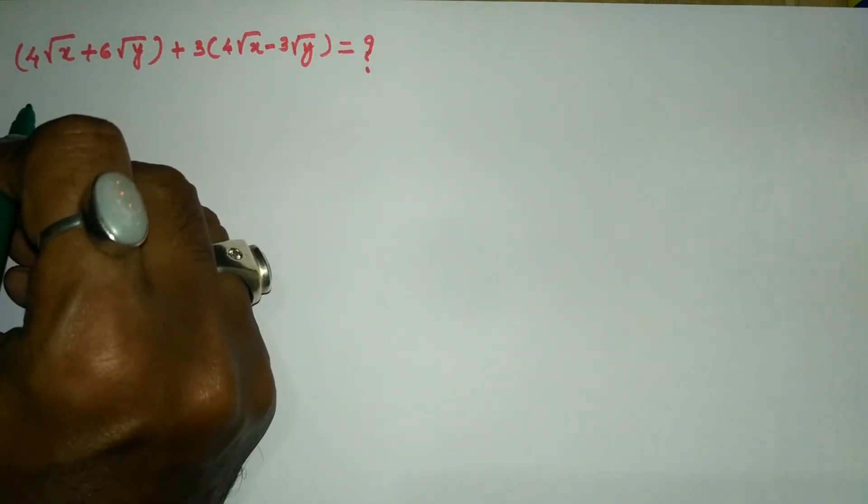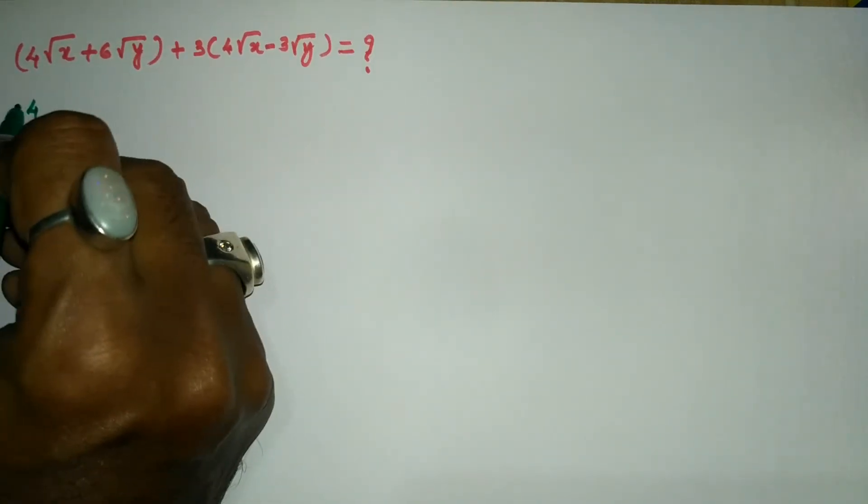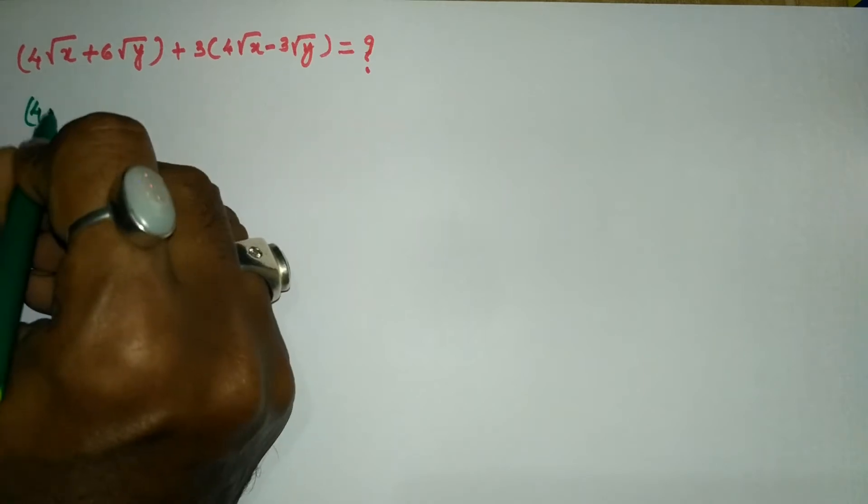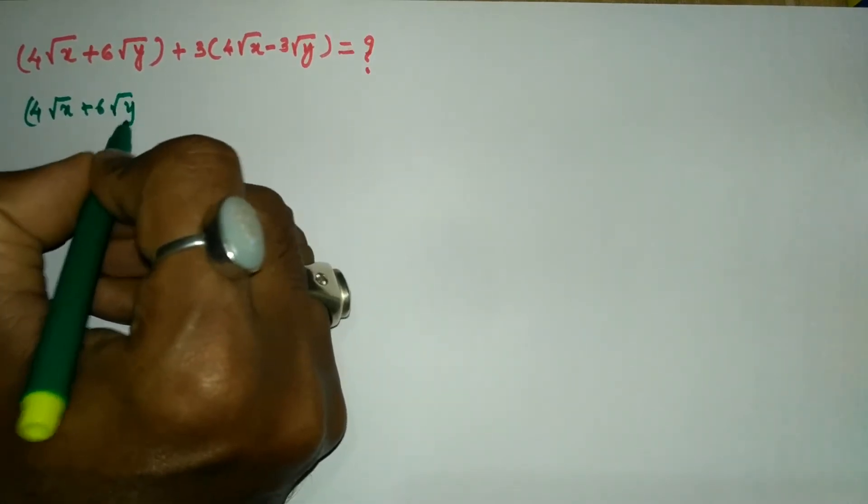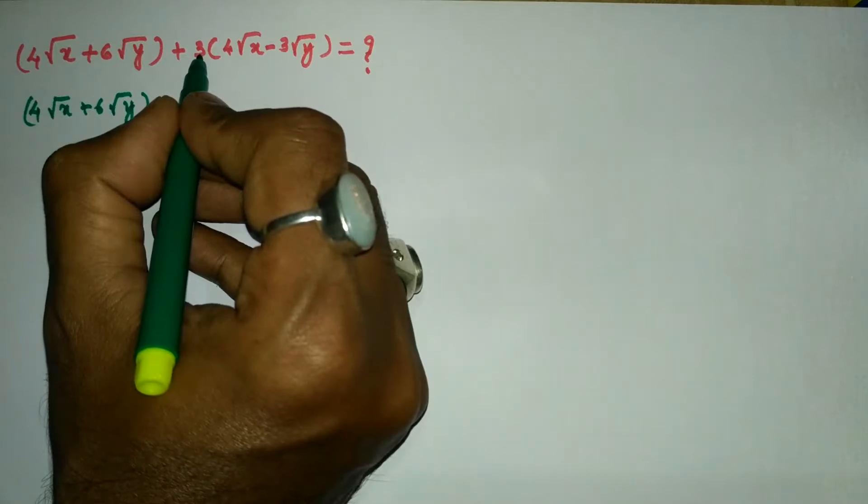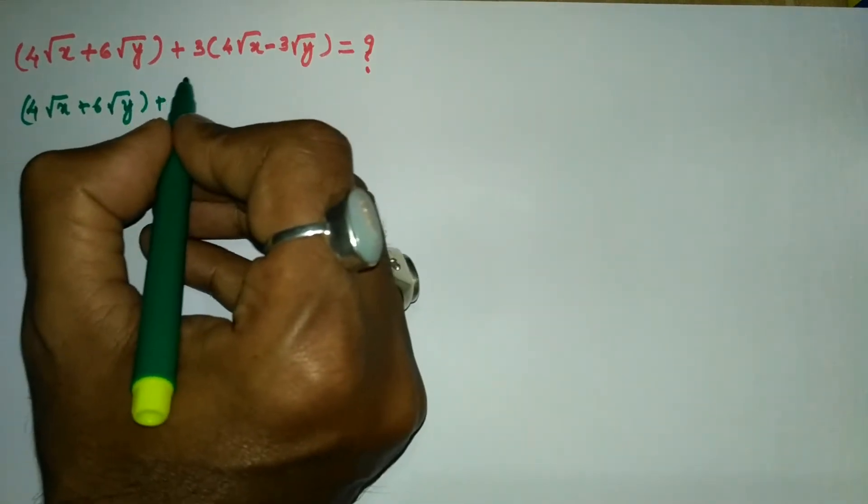Now, let us write the first term as it is: 4√x + 6√y. Plus, this 3 is to be multiplied inside the bracket.